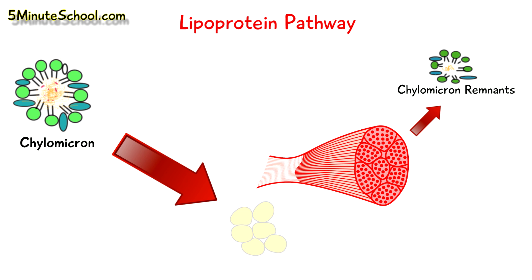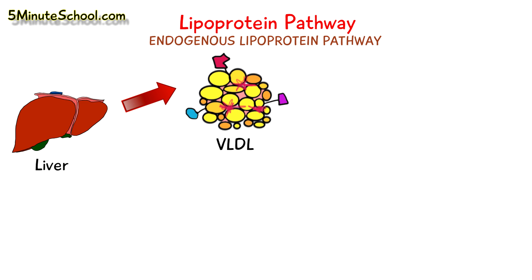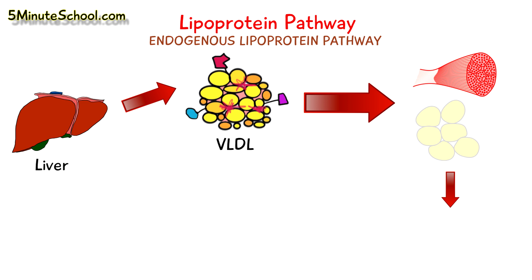The chylomicron remnants are taken up by the liver. Here we start the endogenous lipoprotein pathway. The liver forms very low-density lipoprotein, which travels to the muscle and adipose tissue to release free fatty acids. We then have the formation of intermediate-density lipoprotein.